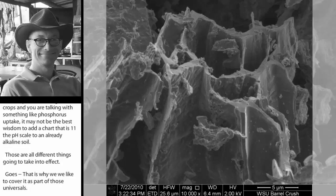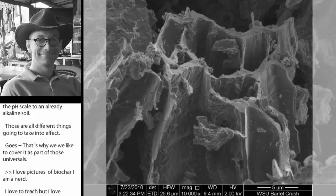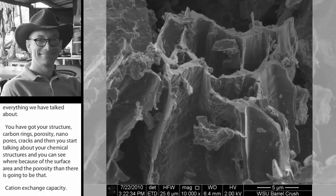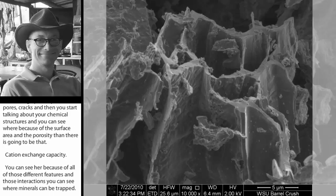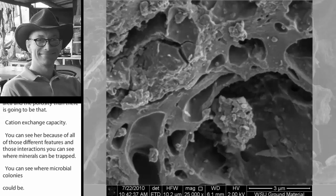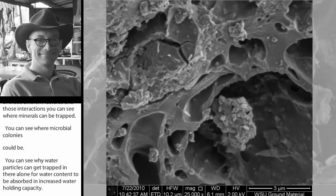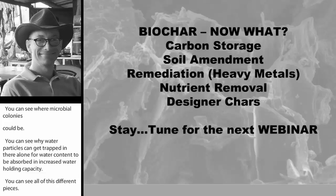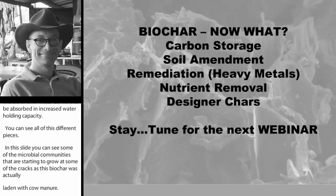I love pictures of biochar. I'm a nerd. I love to teach, and I love being able just to visually see everything that we've kind of talked about. You've got your structure, you've got your carbon rings, you have your porosity, you've got nanopores, we've got cracks. Then you start talking about your chemical structures and you can see where, because of the surface area and the porosity, there's going to be that higher cation exchange capacity. You can see where because of all those different features and those interactions, you can see where minerals can be trapped, you can see where microbe colonies could be, you can see why water particles can get trapped in there allowing for water content to be absorbed and increase water holding capacity. In this next slide you can see some of the microbial communities that are starting to grow and some of the cracks as this biochar was actually laden with cow manure.